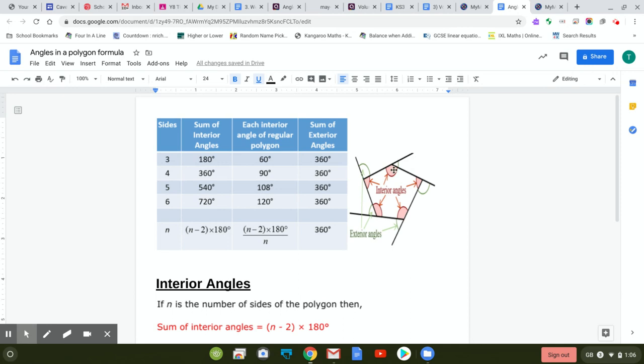Interior angle formula is n minus 2 times 180, so the number of sides minus 2 times 180. It's pretty obvious for the triangle: if it's 3 sides, 3 minus 2 is 1 times 180, that makes sense. A triangle adds up to 180. For a square, 4 minus 2 is 2 times 180, which is 360.